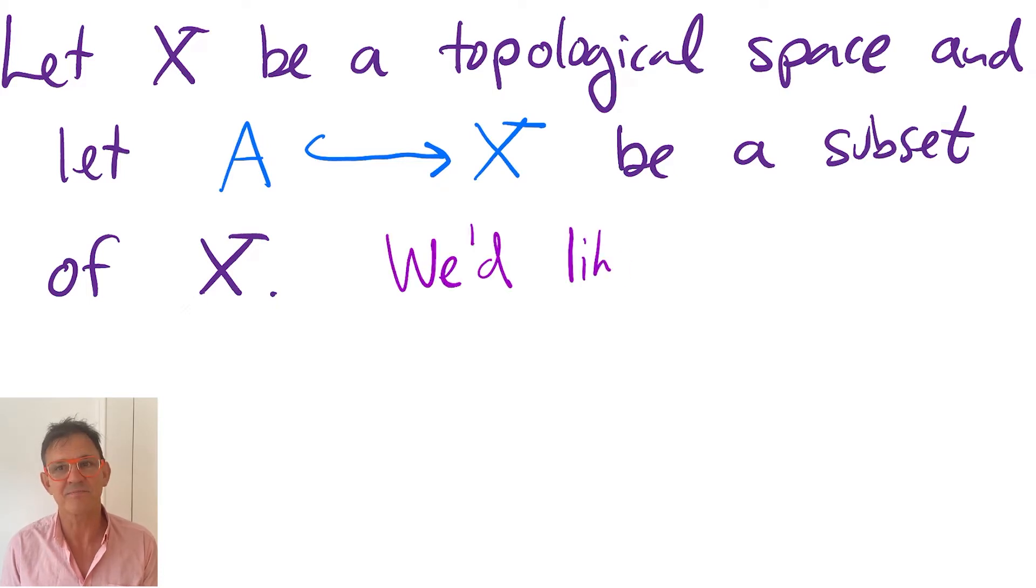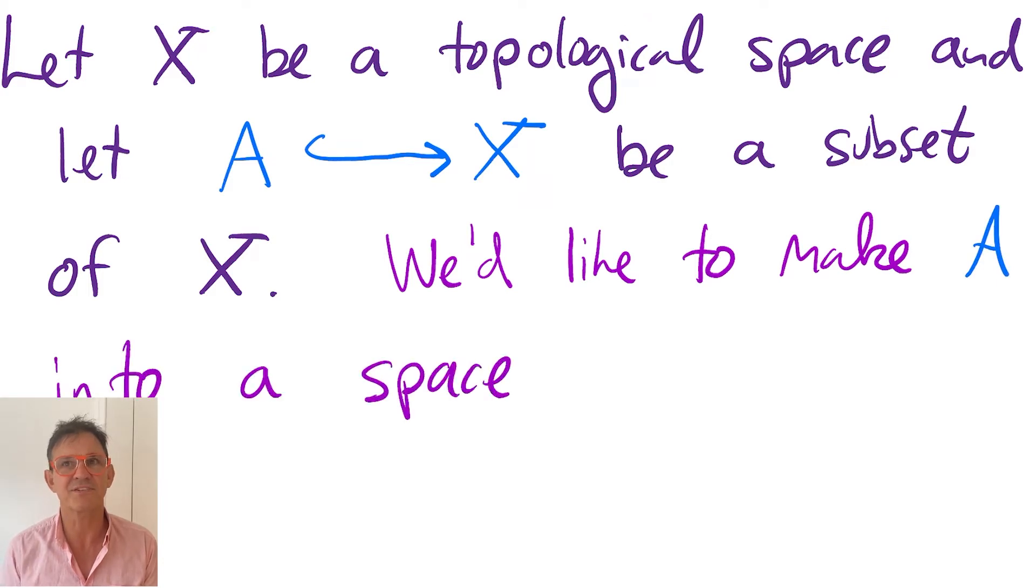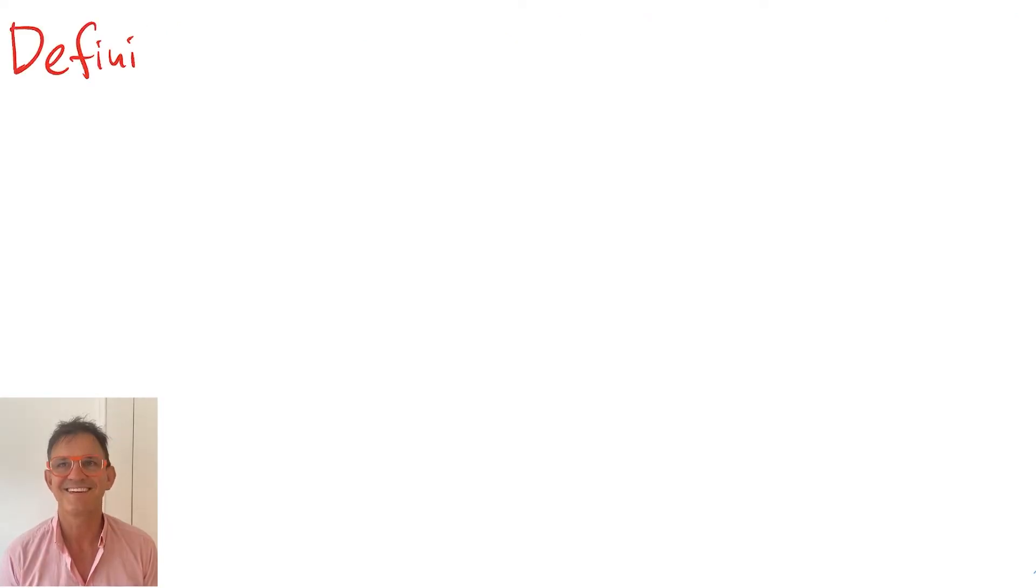How should we do it? In almost any point set topology book, you'll see the following definition of the subspace topology. A subset of A is open if it is the intersection of an open subset of X with A.